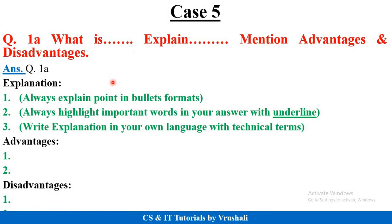Suppose the next question is 'what is — explain and mention advantages and disadvantages.' 'What is' means you write in short — no need to explain in detail. 'Explain' means you have to explain in detail. Give proper headings for advantage and disadvantage, and write points 1, 2, 3 in bullet format.